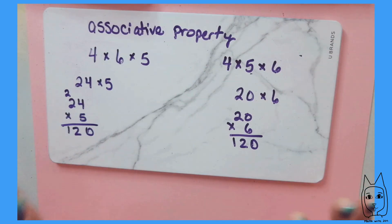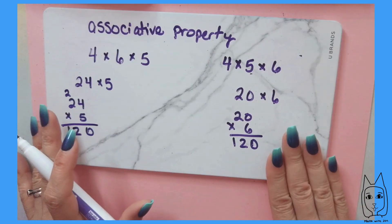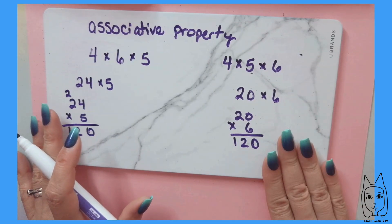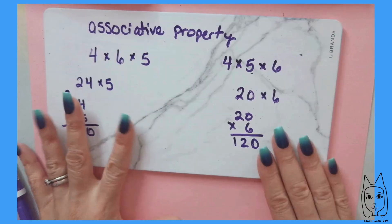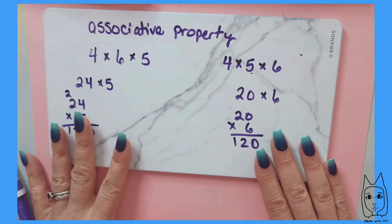In this video we talked about the distributive property, the associative property, and the commutative property in regards to multiplication. Thank you so much for joining me in this video, and I hope you learned something new. See you next time, bye!